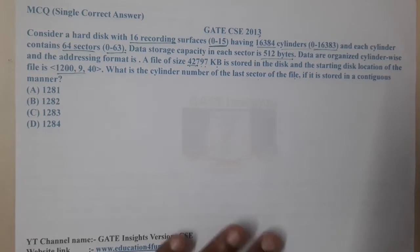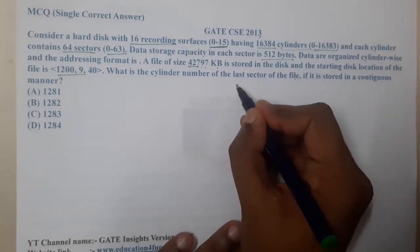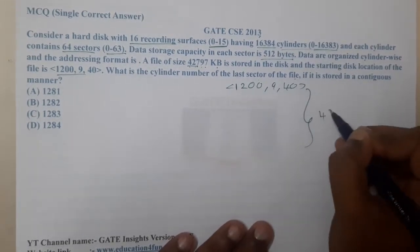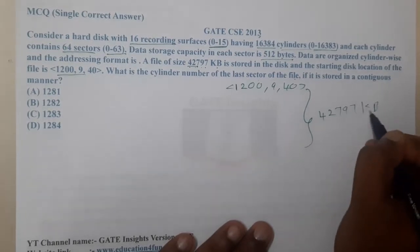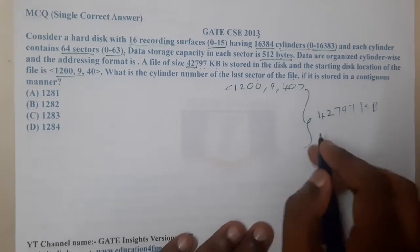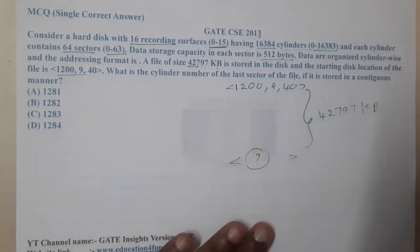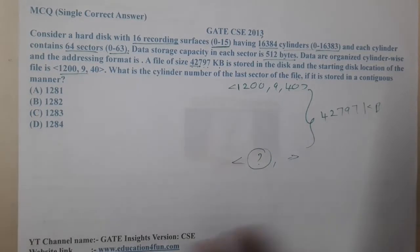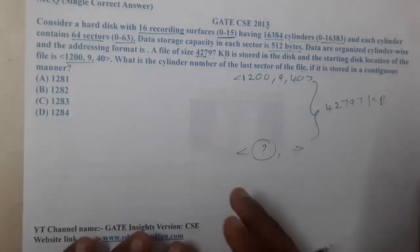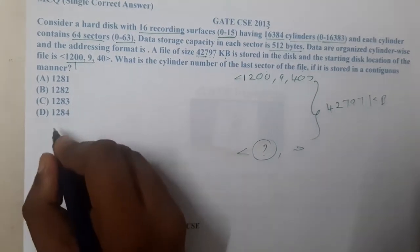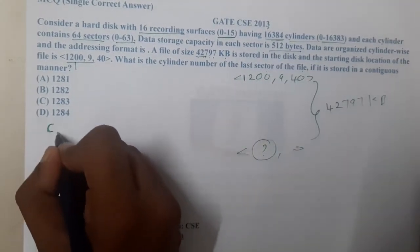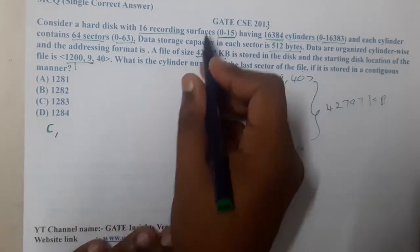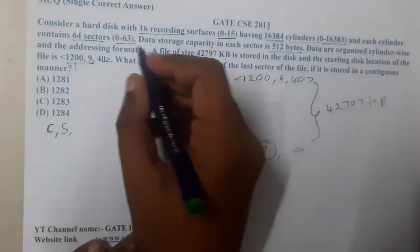This is a clear array-type question. The starting location given is 120, 9, 40. After storing 42,797 KB of data from this location, we need to find the new cylinder number. They don't want all values, just the cylinder value. The first value, 120, is the cylinder number; 9 is the surface number; and 40 is the sector number.